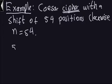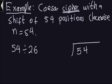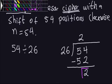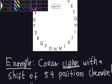Let's calculate the remainder of 54 divided by 26 using long division. I have 54 divided by 26. How many times does 26 go into 54? Only 2 times. So 26 multiplied by 2 gives 52. I do the subtraction: 54 minus 52 gives me 2. This number 2 is the remainder — that's the actual number of positions you have to go clockwise.